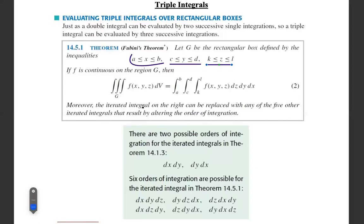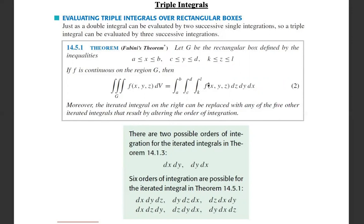Moreover, the iterated integrals on the right can be replaced with any of the five other iterated integrals that result by altering the order of integration. In this case we will integrate the function with respect to z first, then with respect to y, then with respect to x. We can interchange the order of integration — any order will give you the same answer. That is Fubini's theorem.